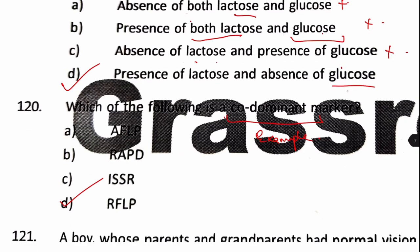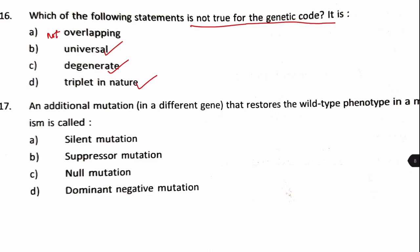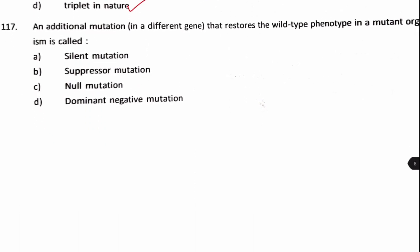Next question: which statement about the genetic code is not true — is it overlapping, universal, degenerate, or triplet in nature? The genetic code is triplet in nature, degenerate, and universal. However, it is non-overlapping, so the statement that it is overlapping is false. Answer: option A.